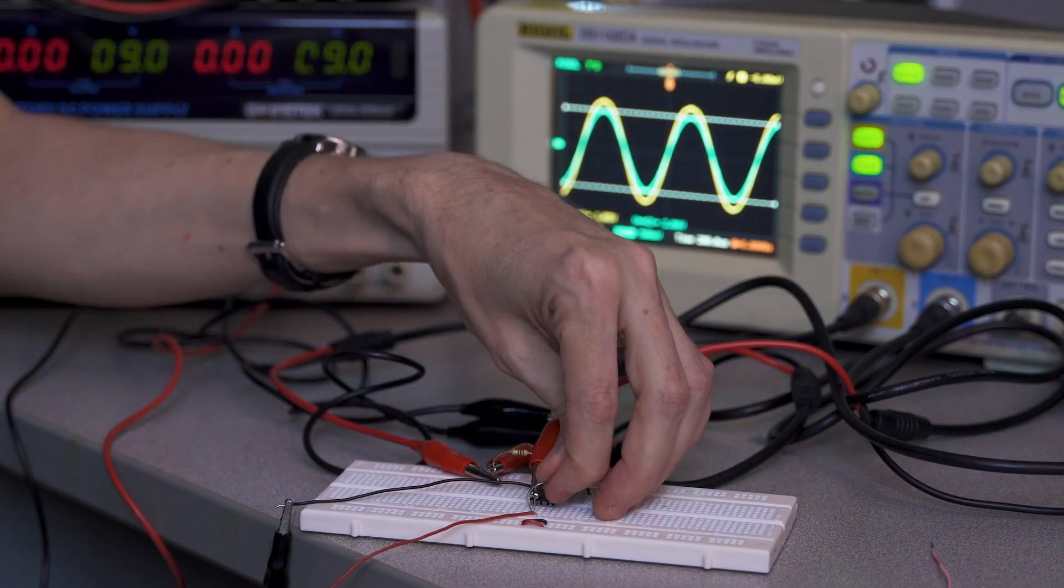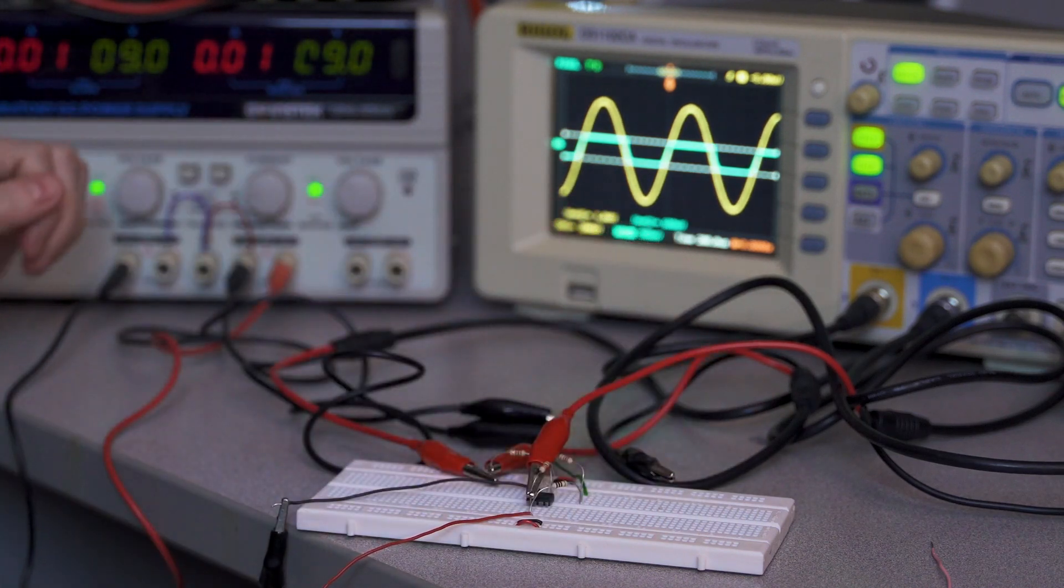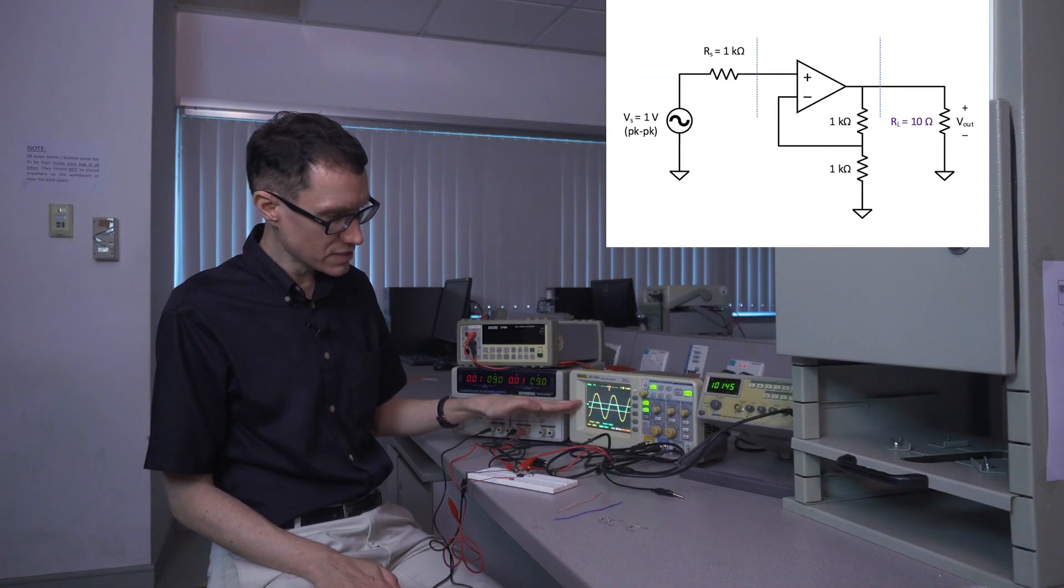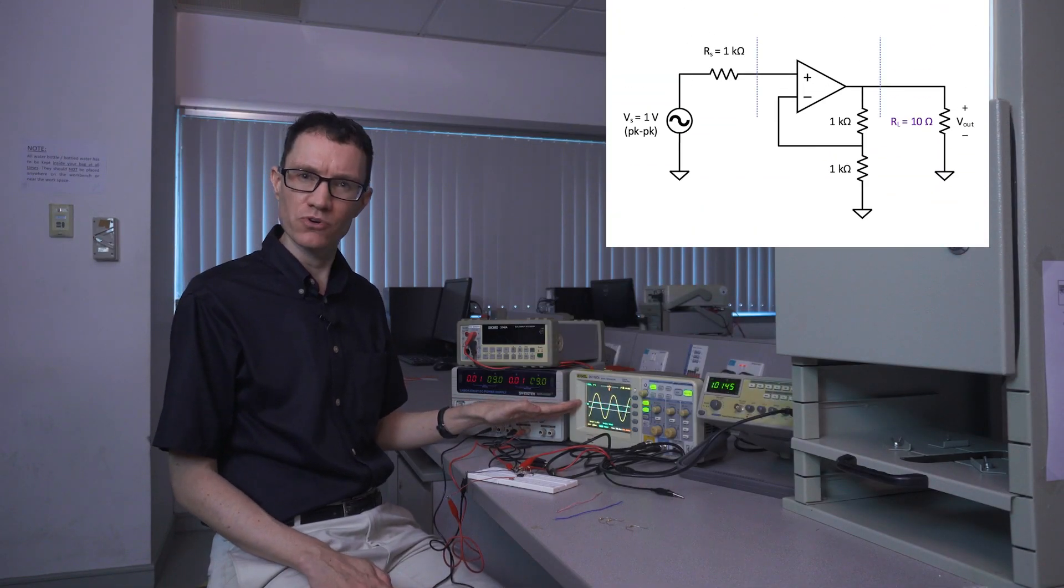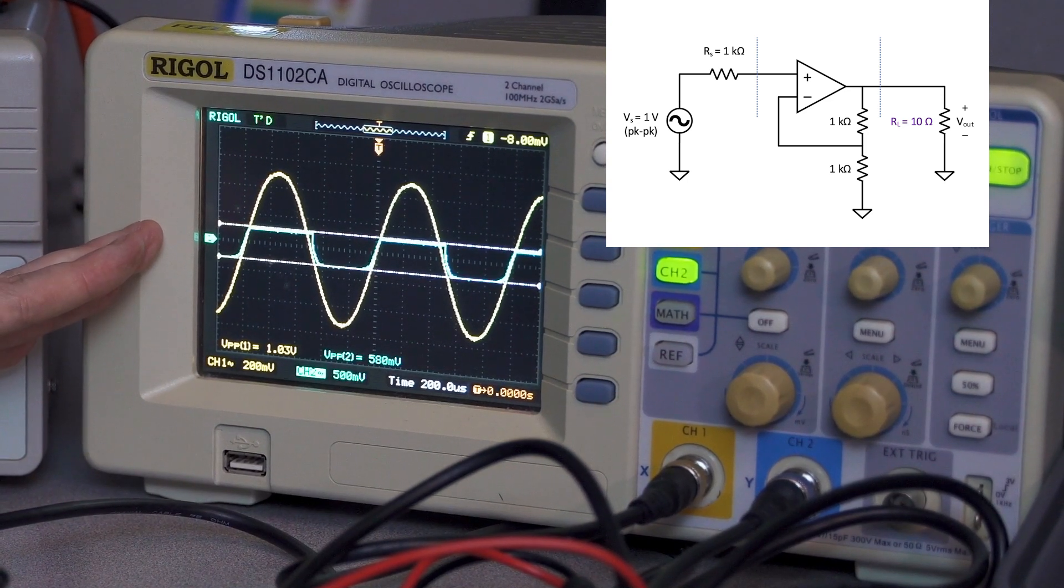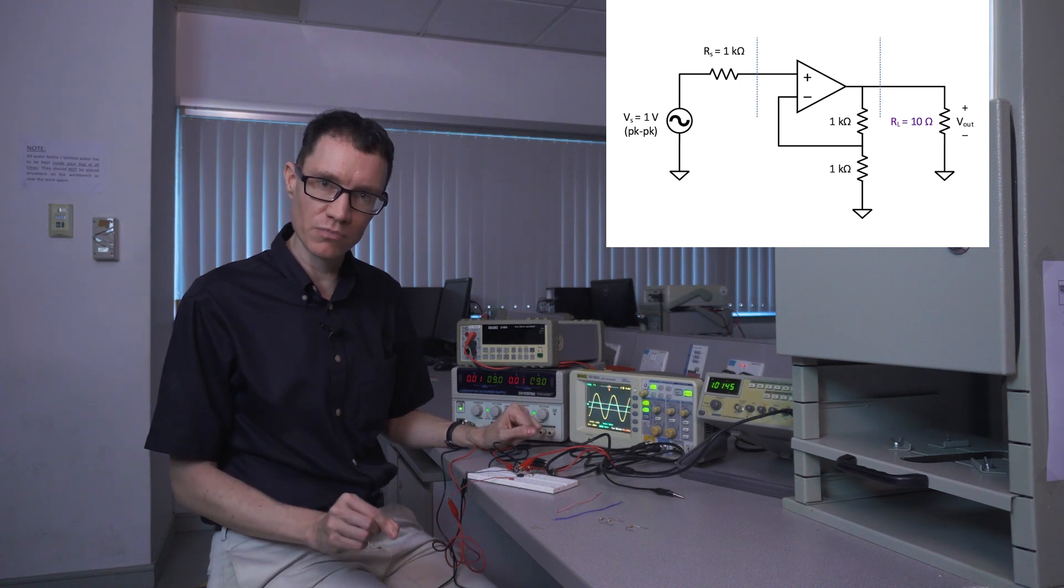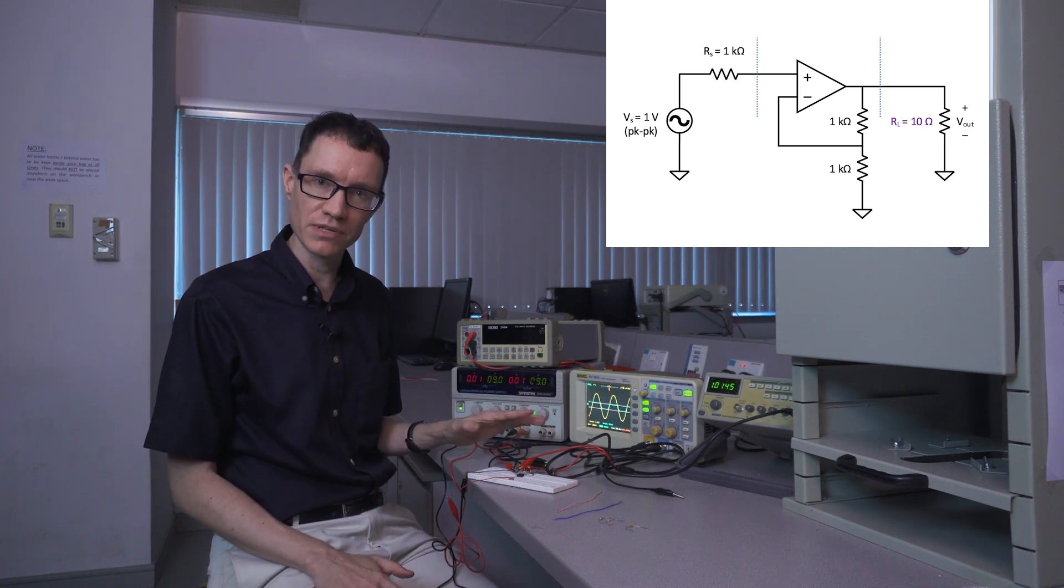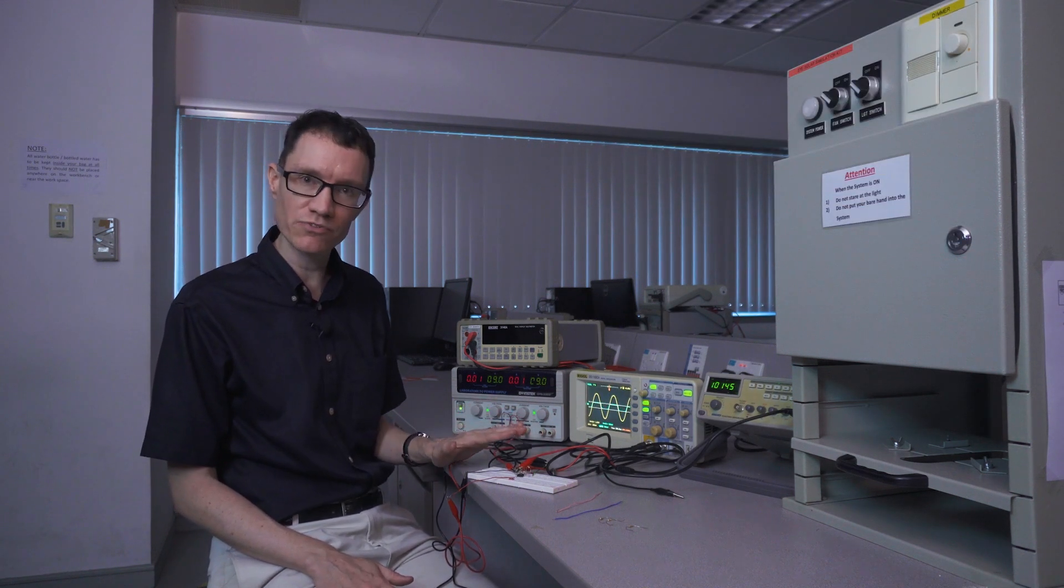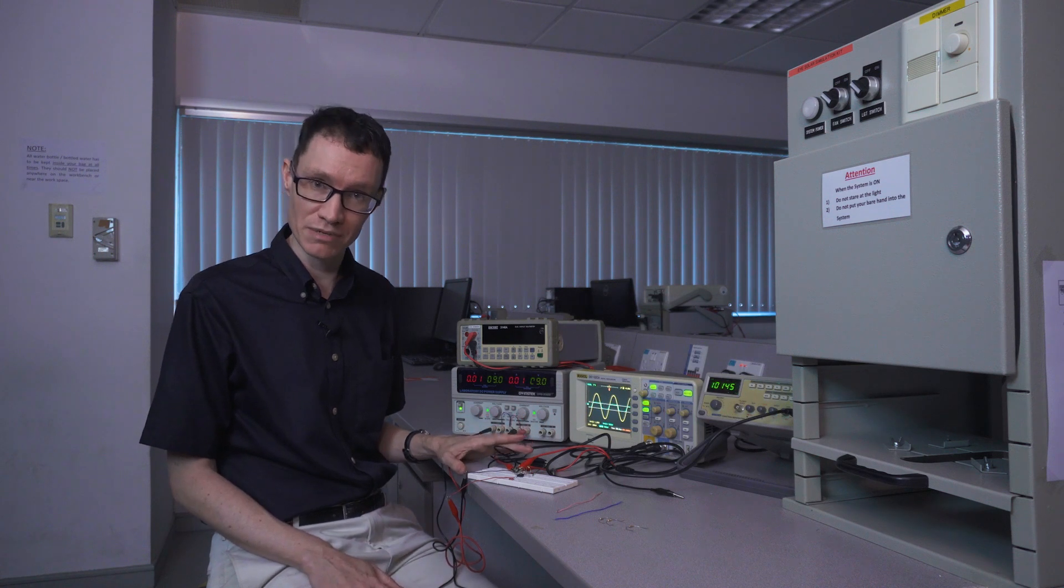Let me show you that eventually this amplifier is going to run into trouble. Let's now use a 10 ohm load resistor. The output peak to peak voltage is now only 0.6 volts, and we can also see that the output waveform is no longer a faithful representation of the input waveform. The amplifier is having trouble, and the reason is because it cannot supply enough power to drive this particular load. So the LM741 is a very good amplifier, but it does indeed have its limits.